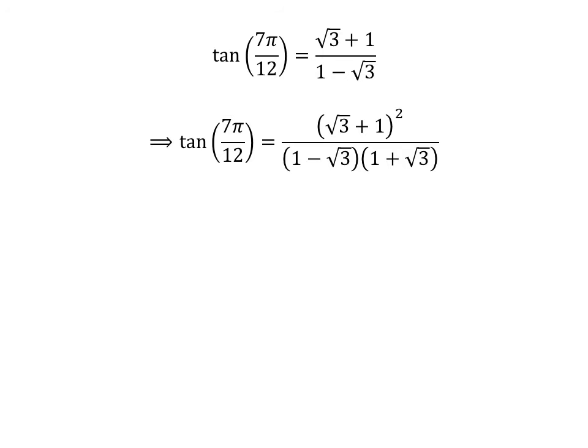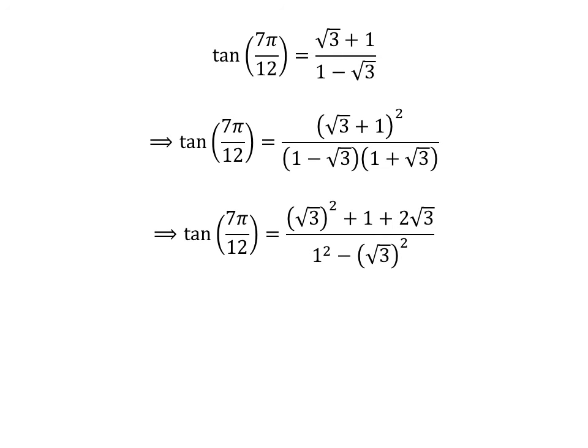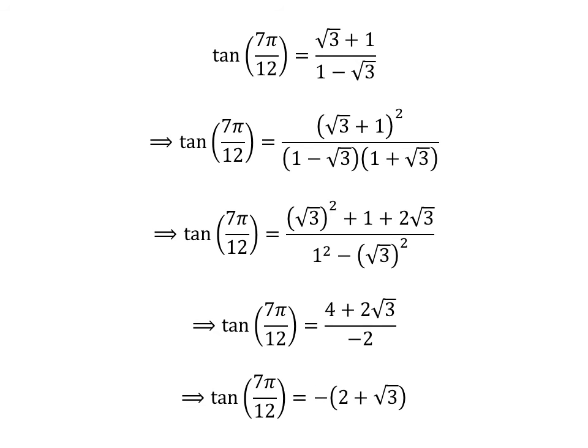Multiplying the numerator and denominator of a fraction by a common factor does not change the value of the fraction. So let us multiply the numerator and the denominator of the right hand side by the common factor 1 plus square root of 3. Here, I have expanded the square of square root of 3 plus 1 in the numerator, and the denominator is in the form of a minus b times a plus b, which is equal to square of a minus square of b. We know square of square root of 3 is 3, so replacing square of square root of 3 by 3 and further simplification gives us tangent of 7 times pi upon 12 is equal to 4 plus 2 times square root of 3 upon minus 2. Taking 2 as the common factor from the numerator and cancelling it with the denominator gives us tangent of 7 times pi upon 12 is equal to minus of 2 plus square root of 3.